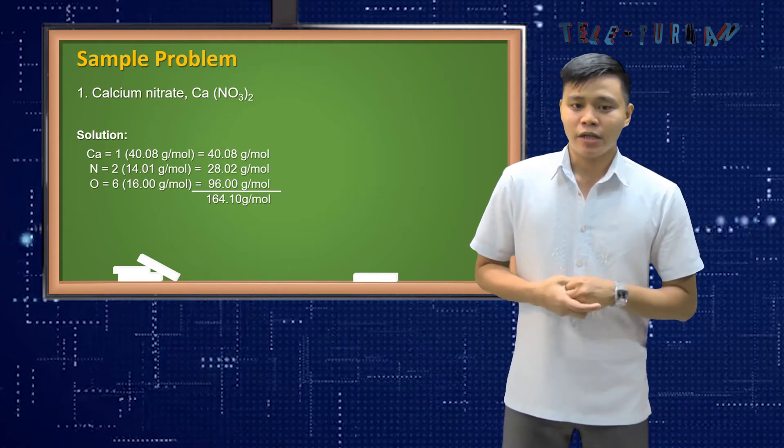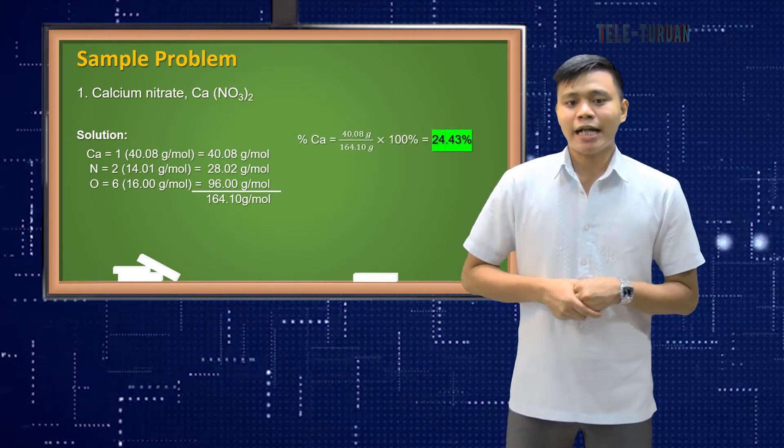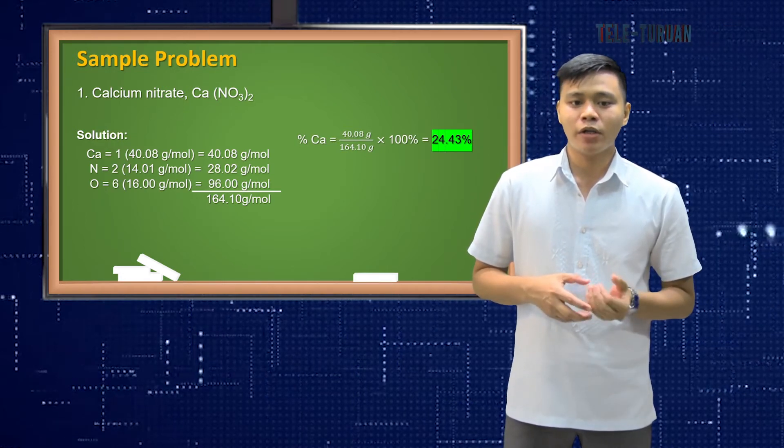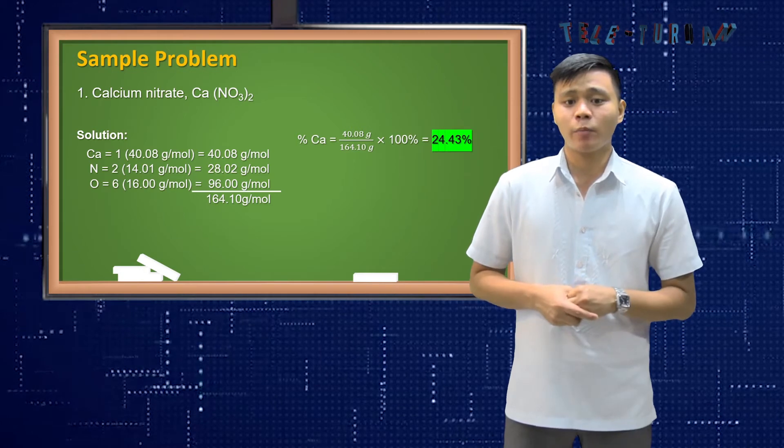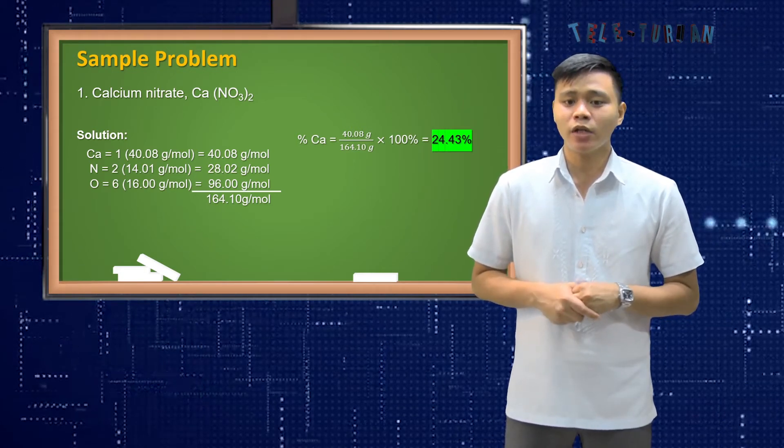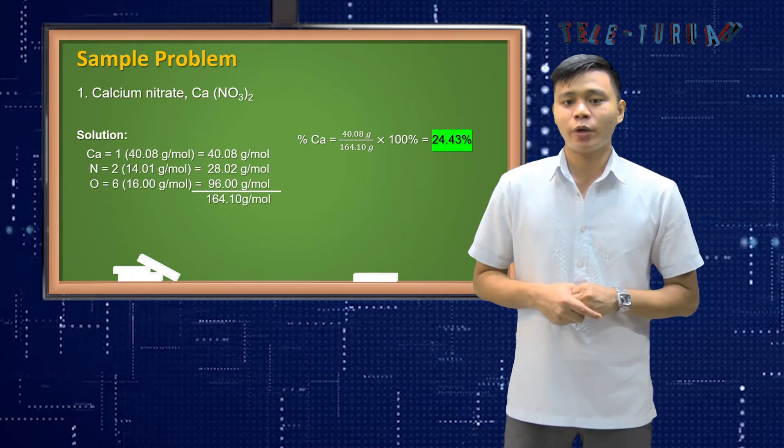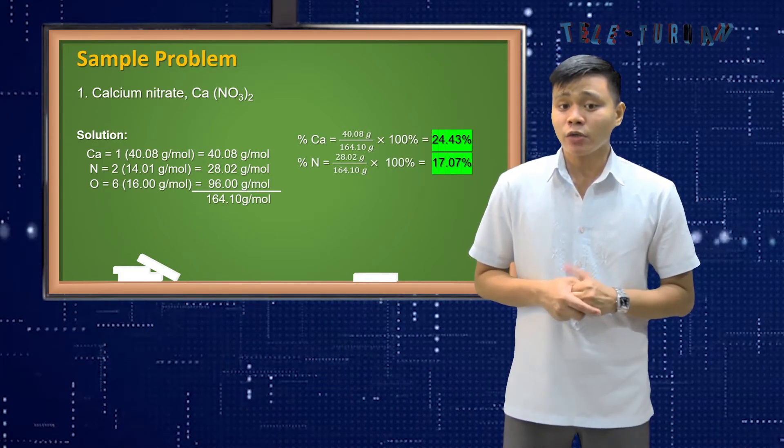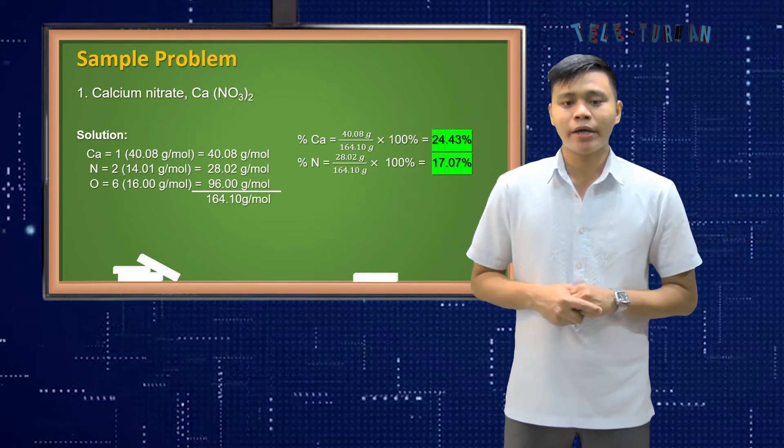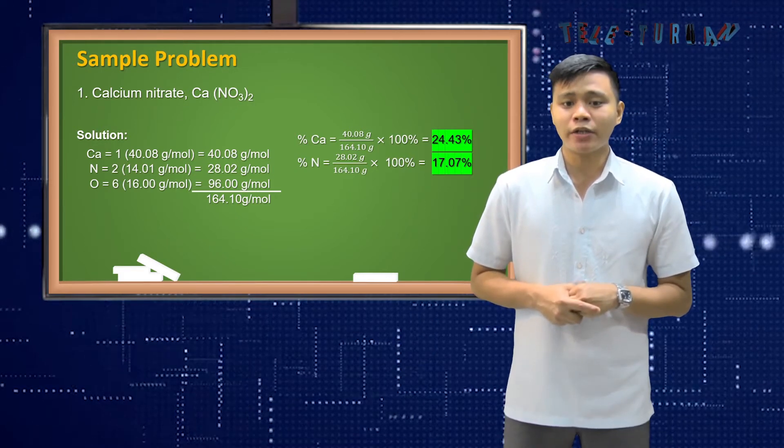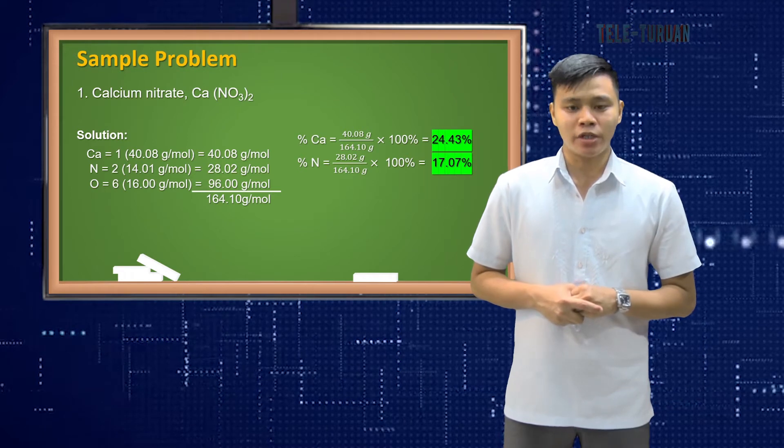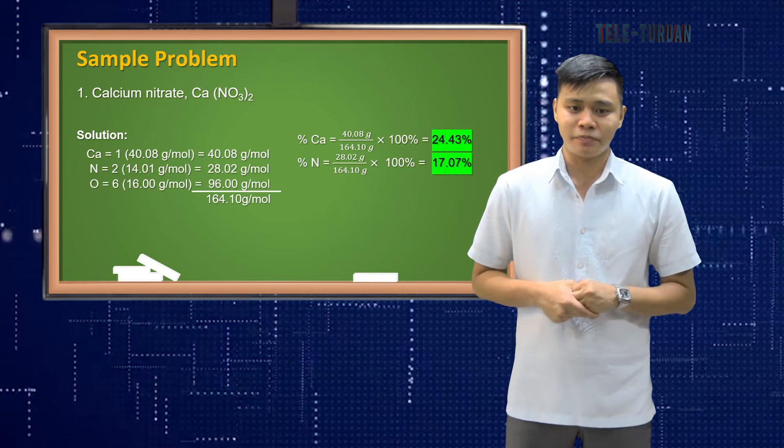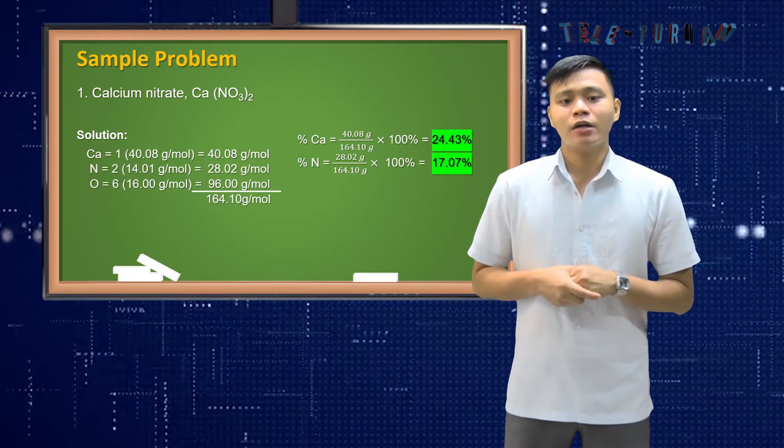So getting the percentage composition of each element in the compound of calcium nitrate is this. Percent calcium is equal to 40.08 grams divided by the total molar mass is equal to 164.10 grams times 100% is equal to 24.43%. For percent nitrogen, it is equal to 28.02 grams divided by 164.10 grams times 100%. What is the answer?